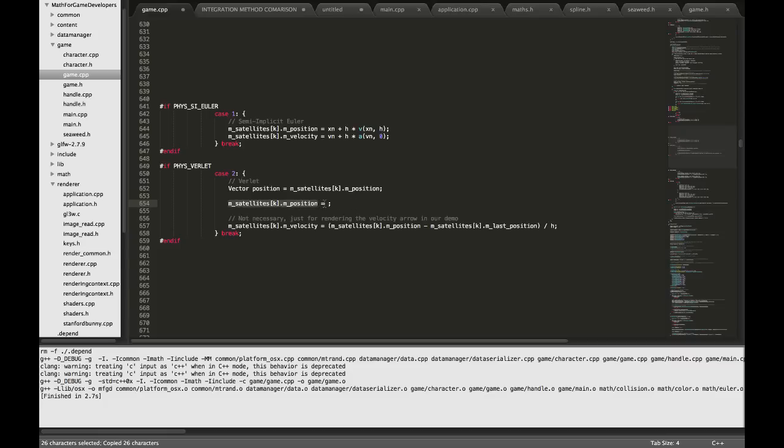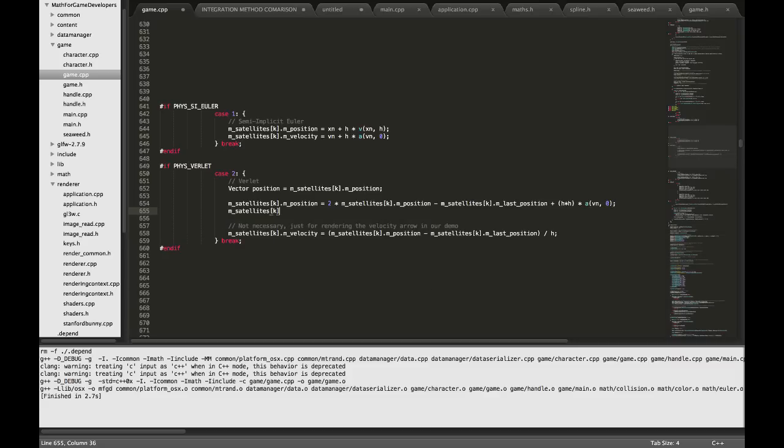So let's do it. We know that our next position should equal two times our current position minus our last position. Then plus h times h times the acceleration function. And then there's one last thing that we have to do, which is to update the last position such that it is the position from this time around. And take note that I had to save away the position from this time because I've already overwritten it with a position from last time. So I have to save this right here before I assign it. Otherwise it will get overwritten in this statement right here.